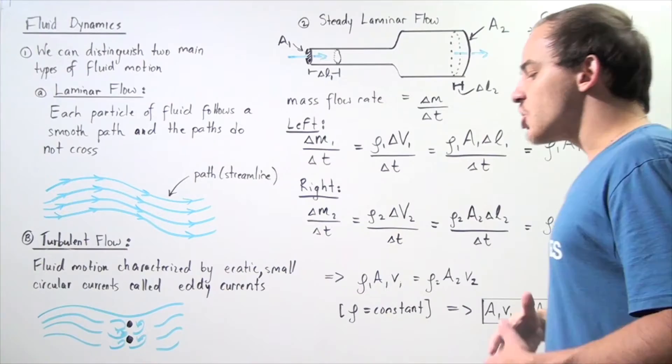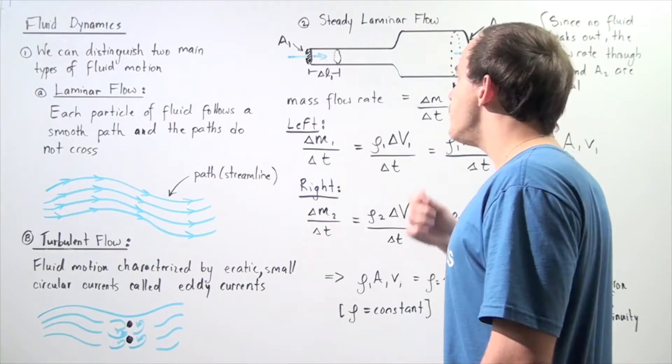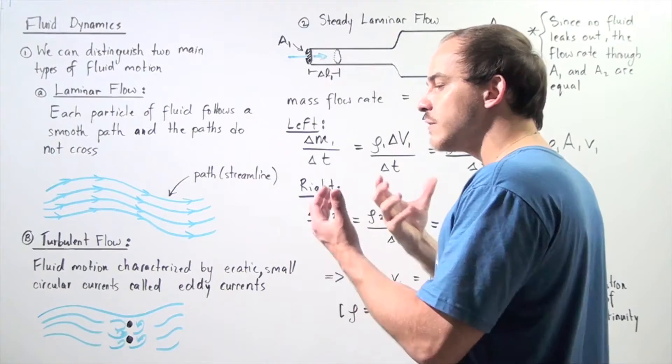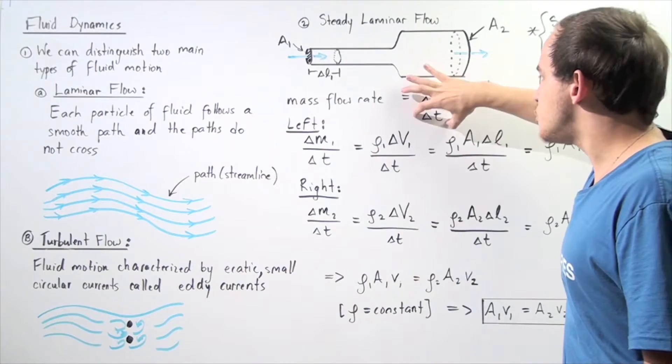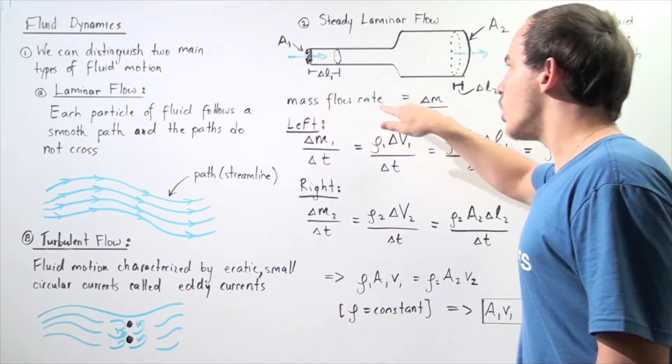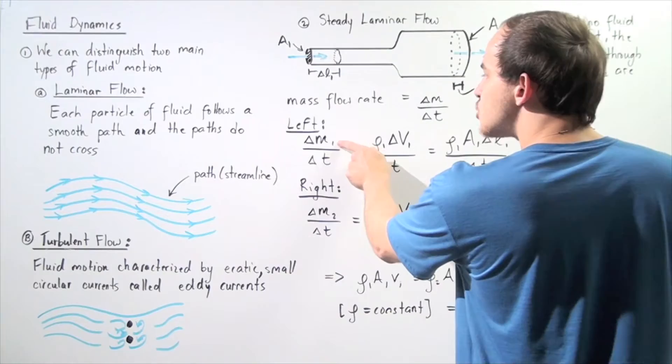Whatever amount of fluid comes in, that same amount comes out from the other end. Let's begin by defining the mass flow rate, which is simply the amount of mass of the fluid that passes over some time interval. The equation for mass flow rate is simply change in mass divided by change in time. We'll label the left side with subscript 1, where A1 is the cross-sectional area.